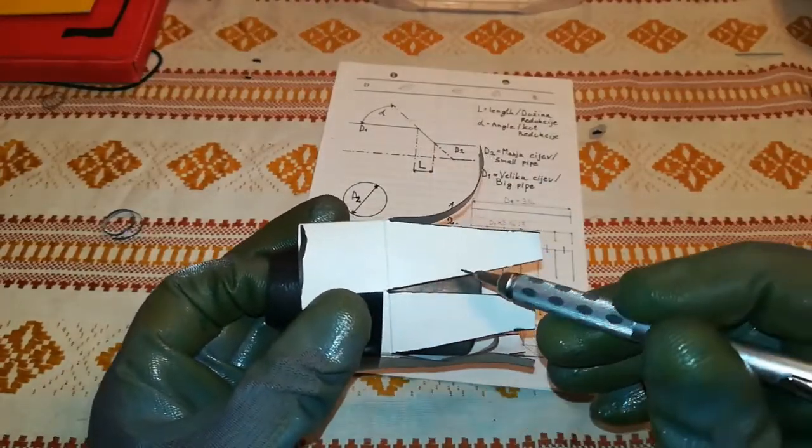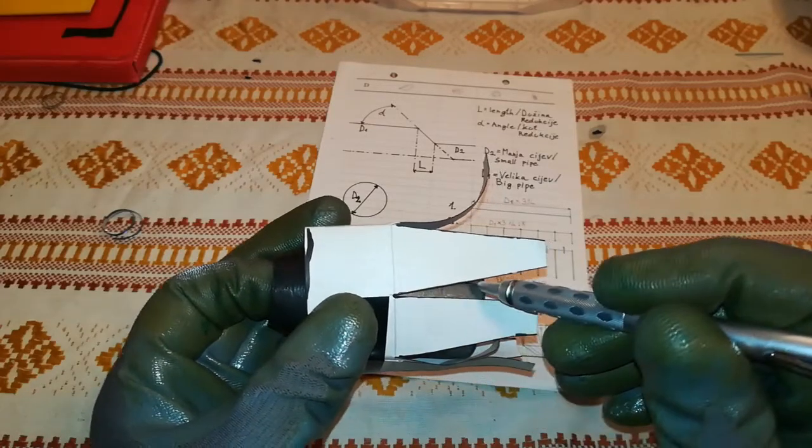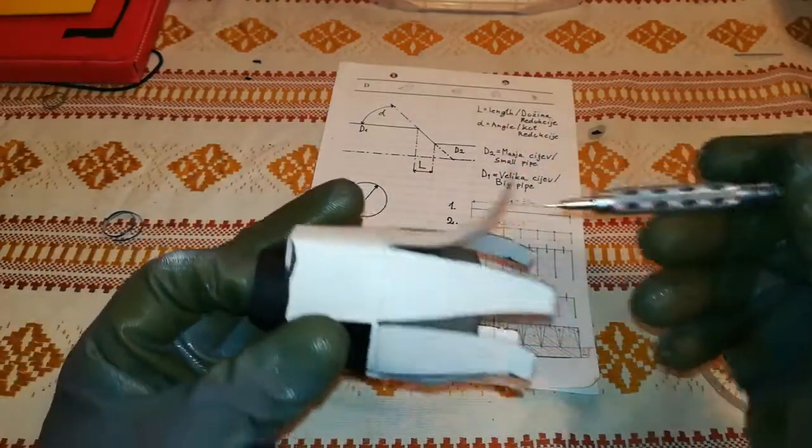Then you mark these lines or you can use the template itself and cut it off with angle grinder, these segments in the circle.